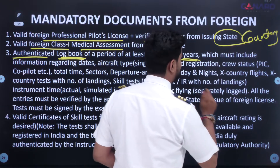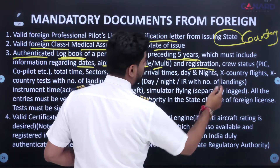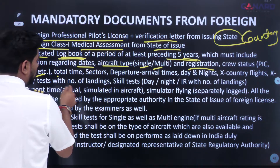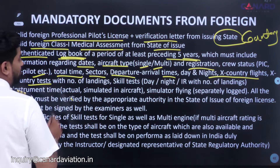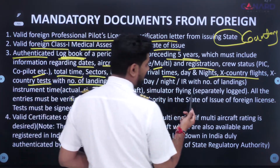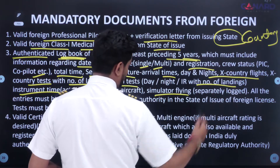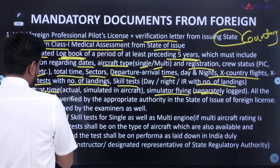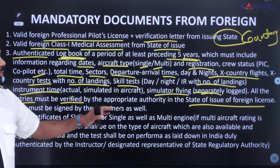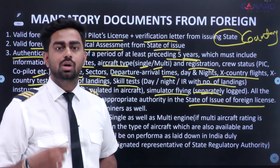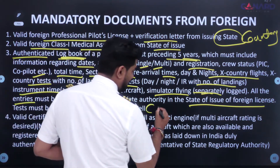Third is an authenticated logbook covering a period of at least the previous five years, which must include: dates, aircraft types (single or multi), registration, crew status (PIC, co-pilot, etc.), total time, sectors, departure and arrival times, day and night hours, cross-country flights and tests with number of landings, skill tests (day, night, IR) with number of landings, and instrument time (actual and simulated). Simulator flying must be logged separately. All entries must be verified by the appropriate authority in the state of issue, and skill tests must be signed by the examiners.